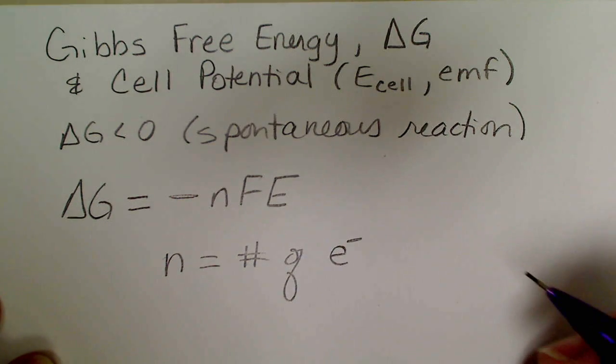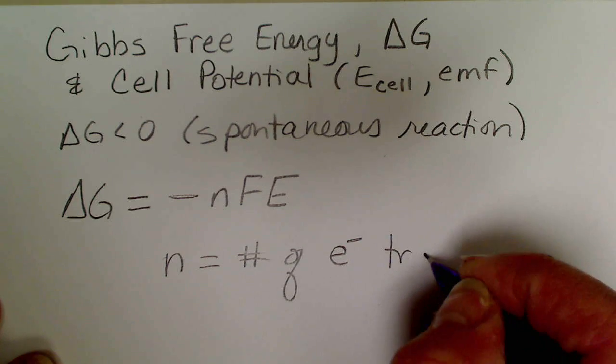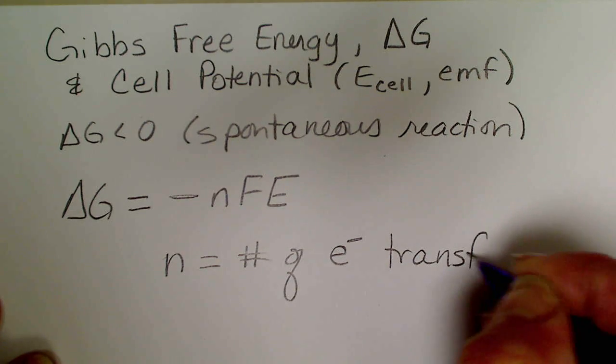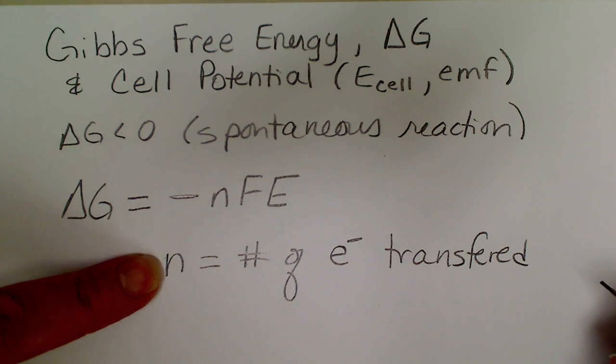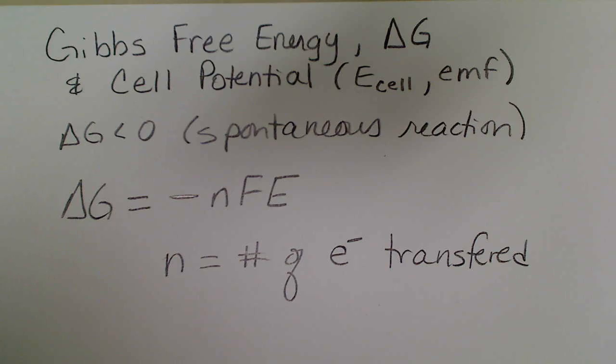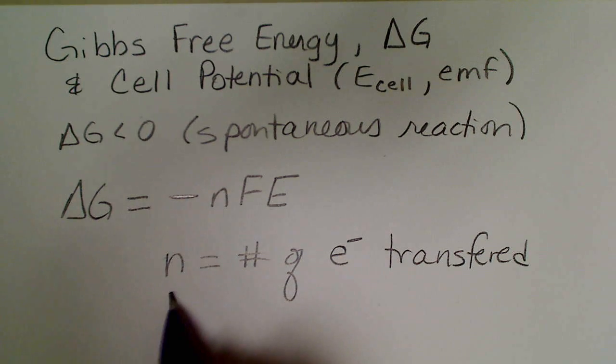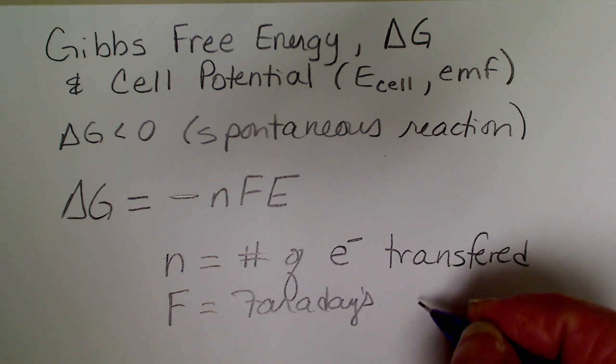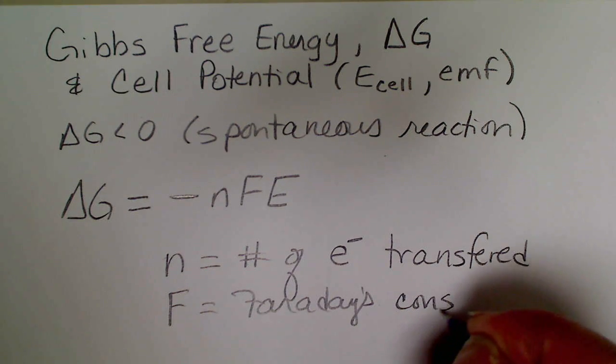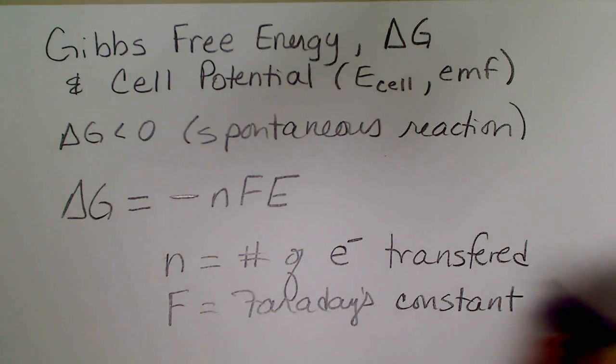N is going to be the number of electrons transferred during the oxidation reduction process. A lot of times that's really obvious from the balanced equation, but oftentimes this is difficult to determine, and so I'll do that later in a video where we actually determine that number of electrons transferred.